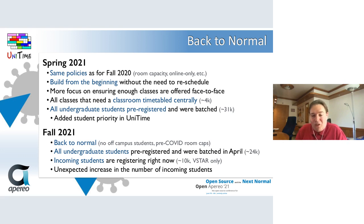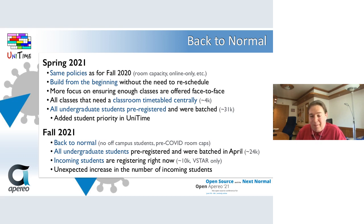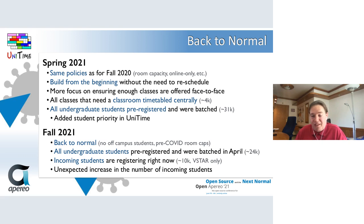For spring 2021, timetabling and student scheduling used the same policies as fall 2020, but the process was much easier since timetabling and student schedules were built from the start with these policies in mind. There was also more focus on ensuring each department offered enough face-to-face classes, and course timetabling for all classrooms on campus was done centrally. For the first time ever at Purdue, all undergraduate students pre-registered, and they got their initial schedules built using the UniTime Batch Student Scheduling Solver. This presented additional challenges, as over 31,000 students had to be batched — a huge optimization problem. Prioritization was added, giving more priority to athletes, priority students, students about to graduate, and senior students.